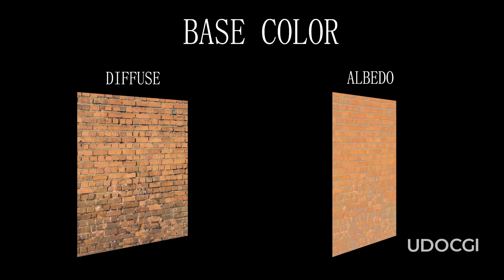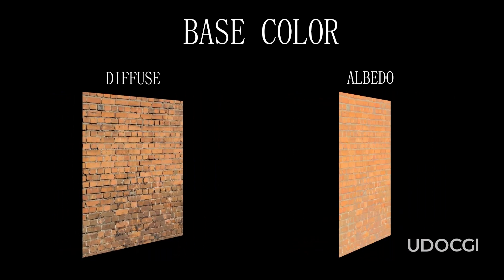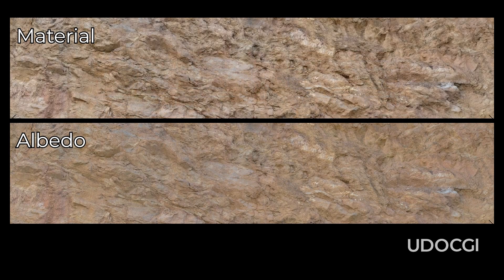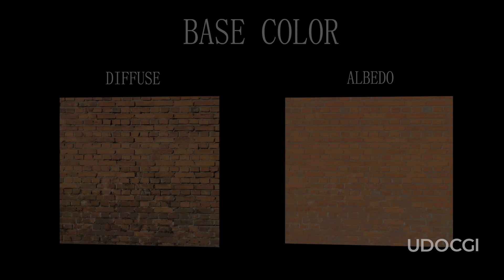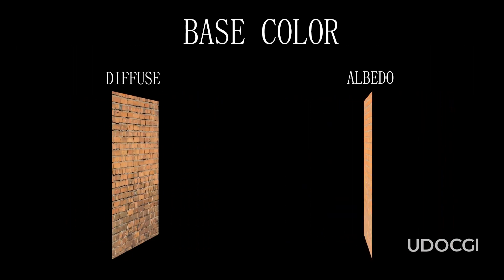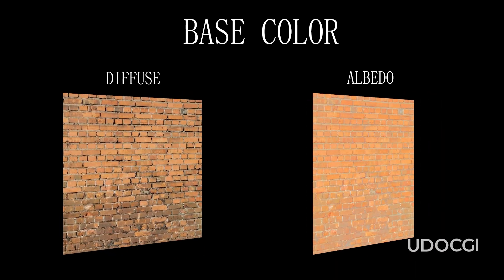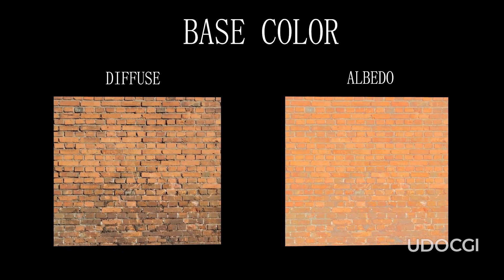Albedo maps represent the pure base color of a material without any lighting effects. They show the material's inherent color and brightness and indicate how much light is reflected from the surface. Bright or white areas in an albedo map reflect more light, while dark areas reflect less. Since albedo maps do not contain baked-in lighting, shadows, or highlights, they are particularly suitable for modern PBR workflows, where accurate representation of light interaction is crucial.